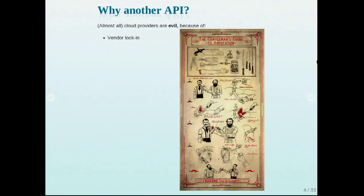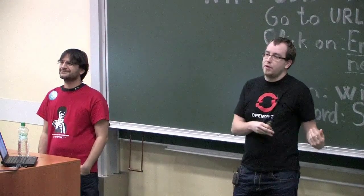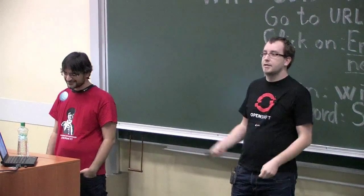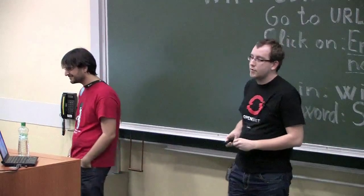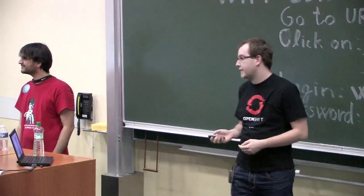We call this vendor lock-in. This happens all the time in IT. You can remember big database servers that you start to use, and after that you discover there is a MySQL or Postgres that can do basically the same stuff. But all your infrastructure was built to use the big database, so it was very hard to transition and you needed to invest a lot of money.